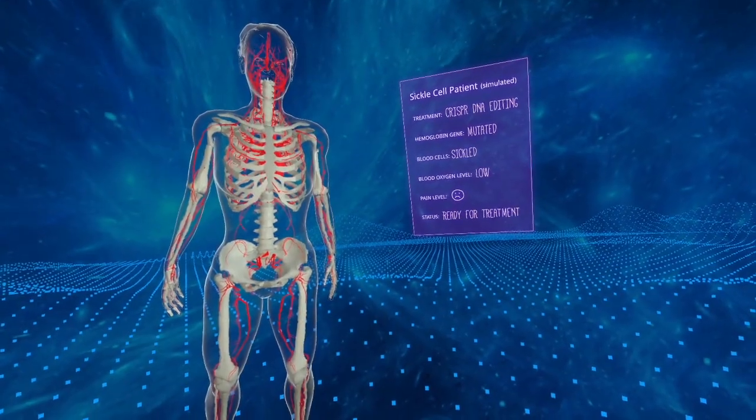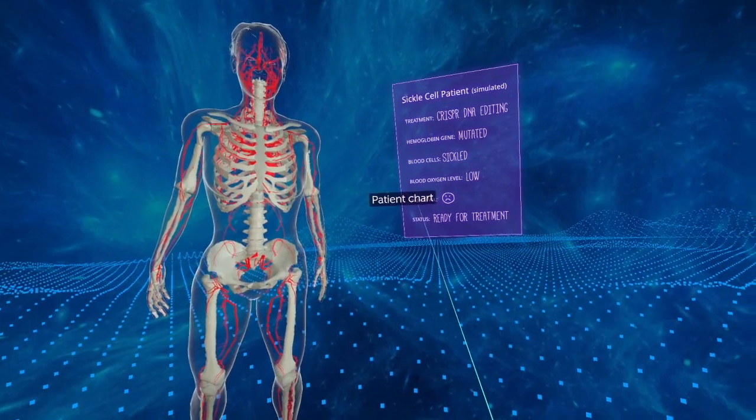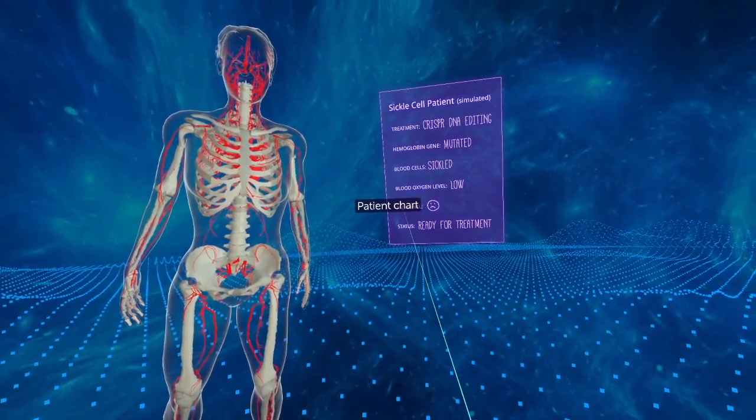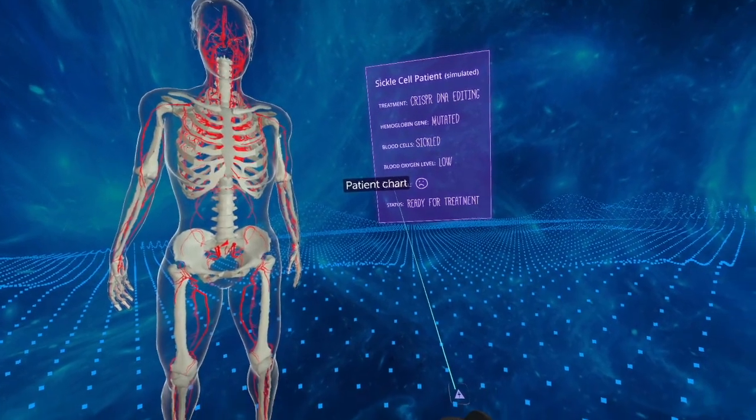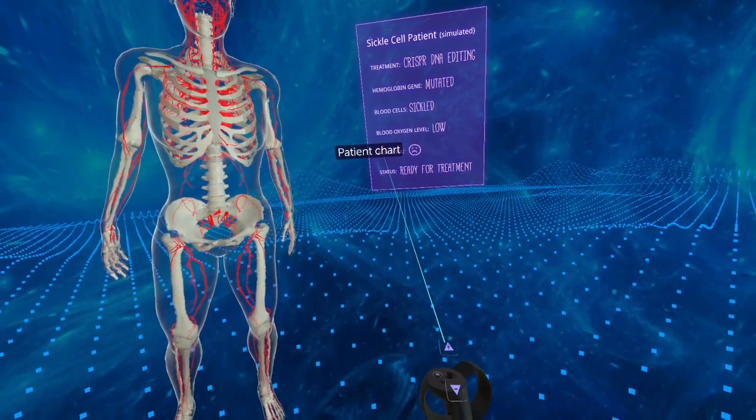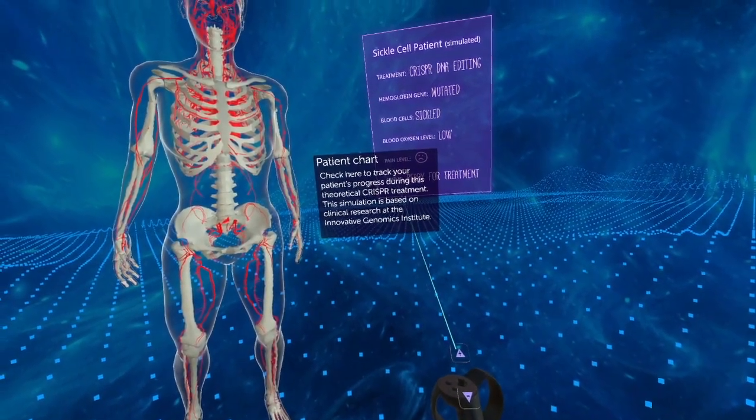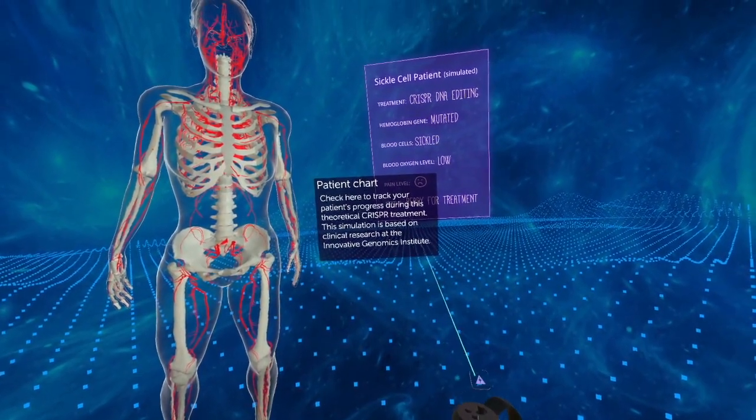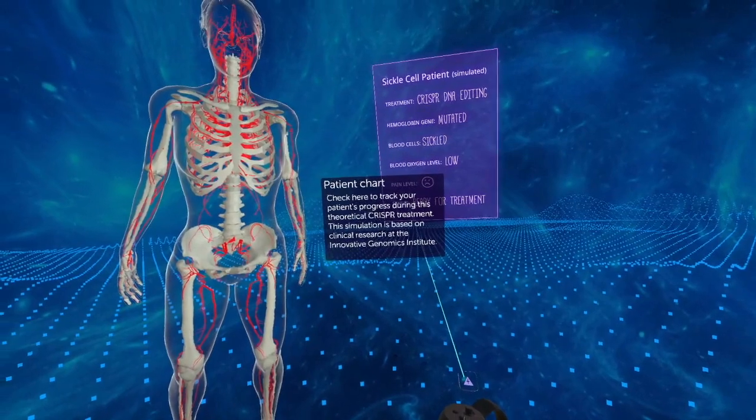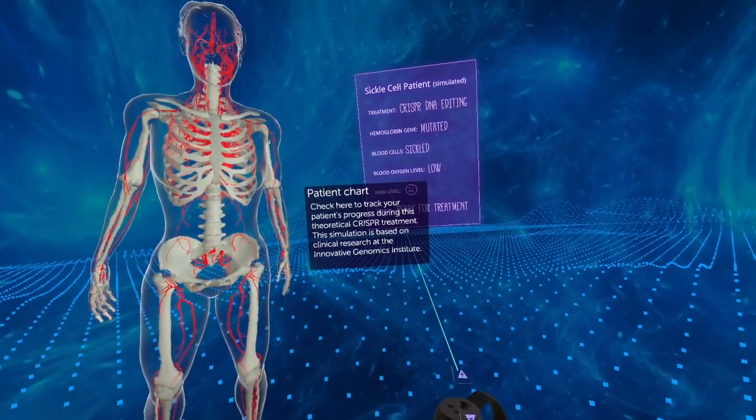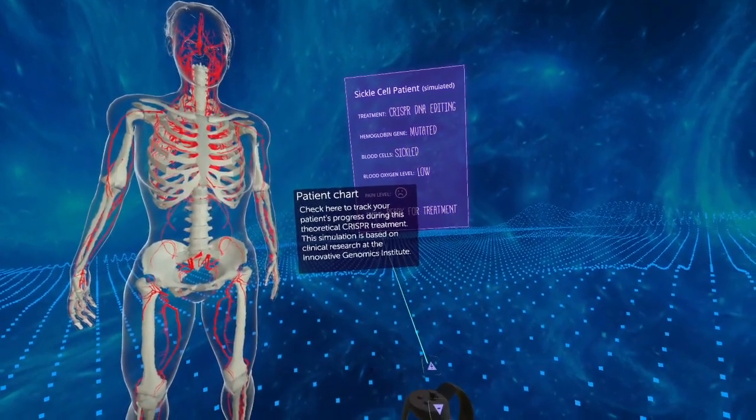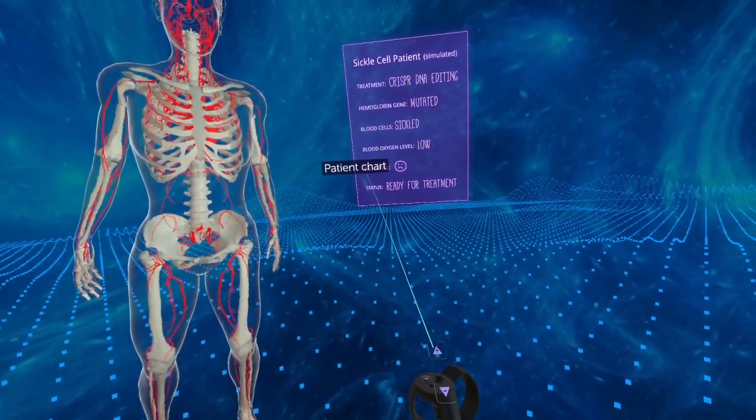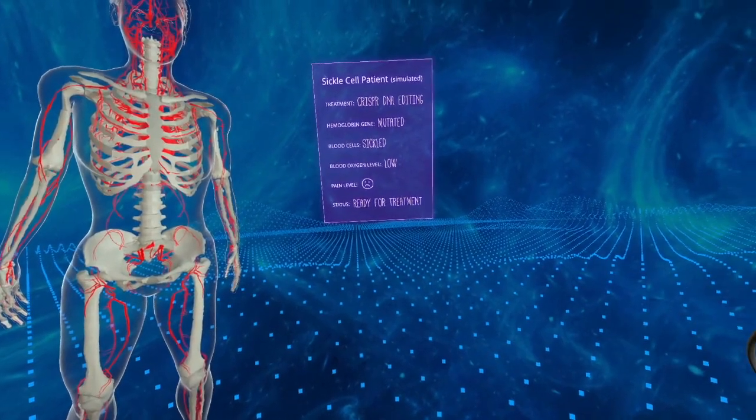If you point at an object, it shows the label, and if you want to expand that label to learn more, you press your right index finger trigger. That will expand a description and give you more information. To collapse or close that expanded label, just press that right trigger once again, or move the laser far away.